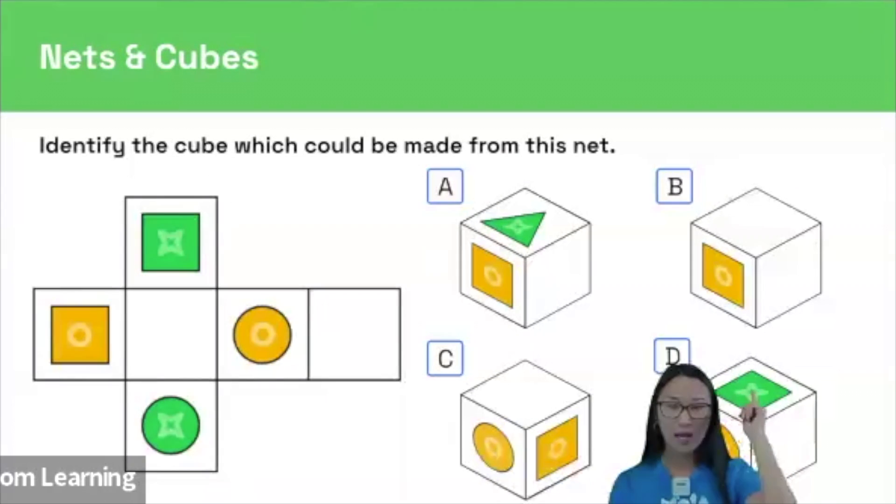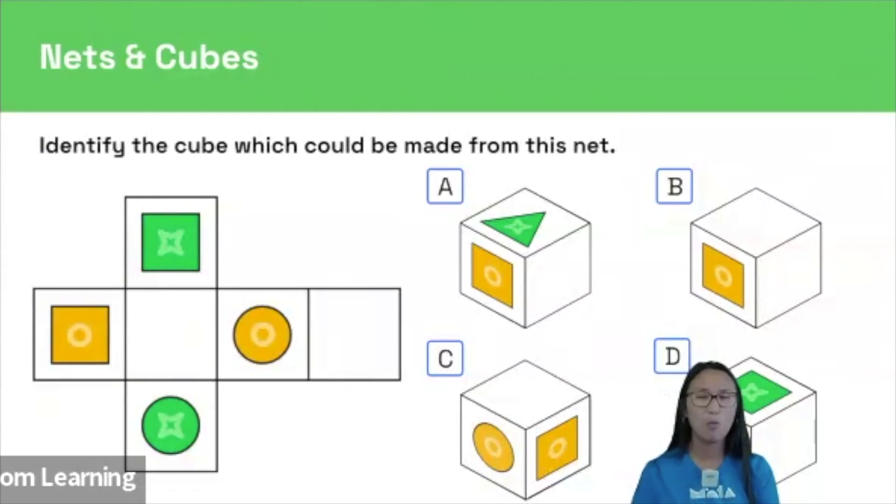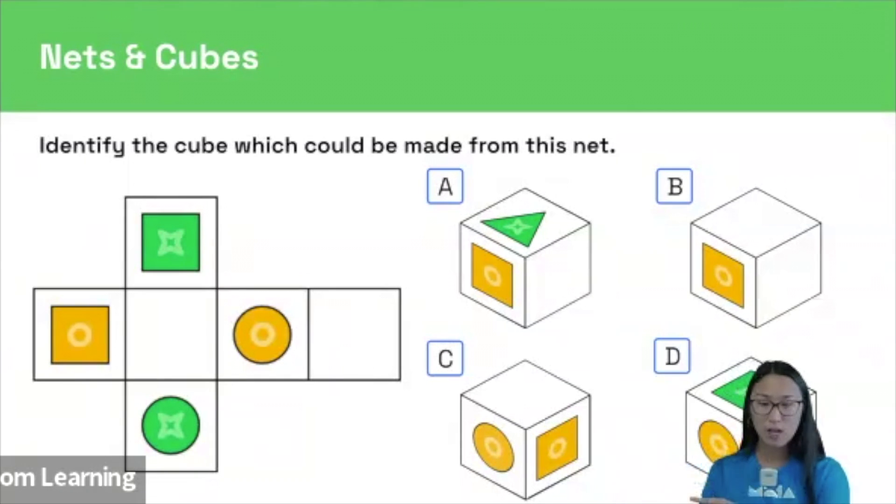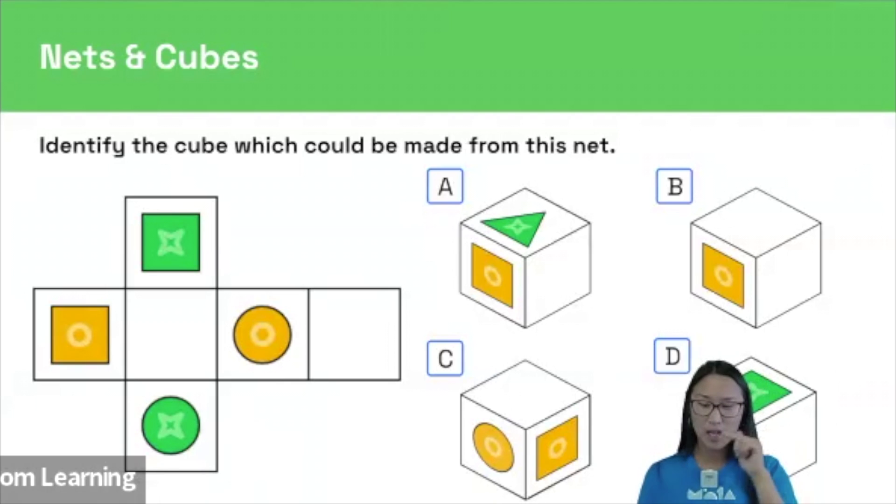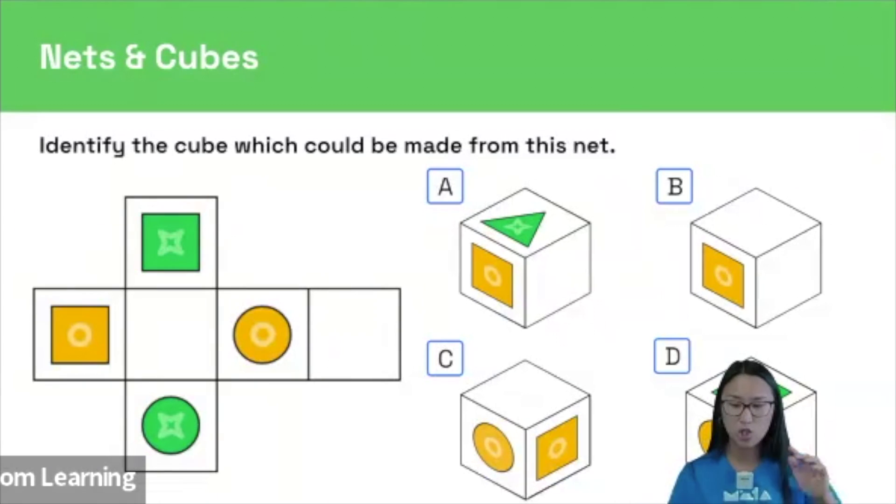Then if we look at B, we know that B is incorrect because there should be at least one green shape on the cube. There's no way of folding up the net so that there is no green shape available. Then if we look at C, we can see that it violates the opposites rule. So over on our net, the yellow square and the yellow circle should be opposite each other. Therefore, they can't be seen at the same time on a cube.